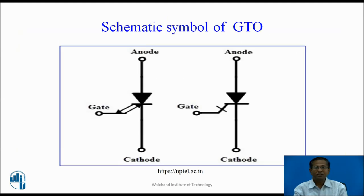Schematic symbols of GTO. These are the schematic symbols. In the first symbol, the inward arrow indicates that to turn on the GTO, it requires positive gate current IG, and the outward arrow indicates that to turn off the GTO, it requires negative gate current.